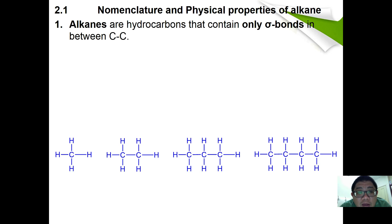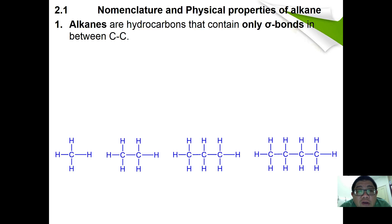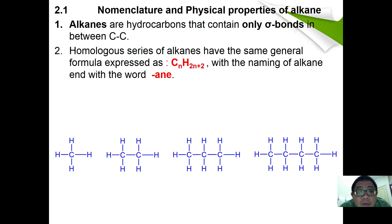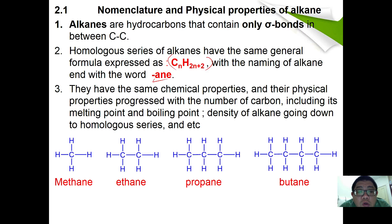Now let's look at the nomenclature and physical properties of alkane. Alkanes contain only sigma bonds between C–C atoms. The general formula of alkane is CnH2n+2 and all of them will end with the suffix '-ane'. They share the same chemical properties and their physical properties progress with the number of carbons, including melting point and boiling point.